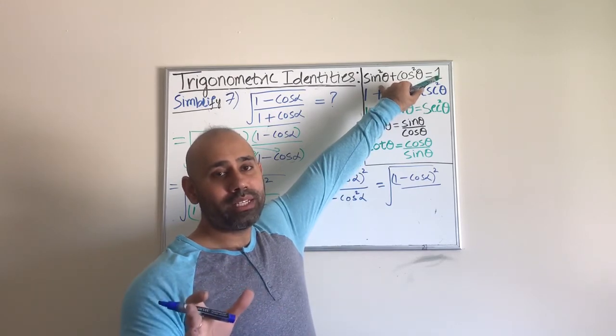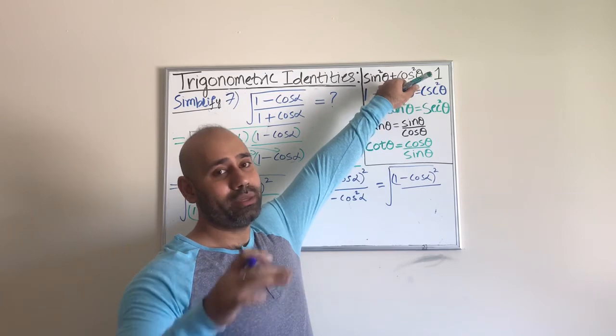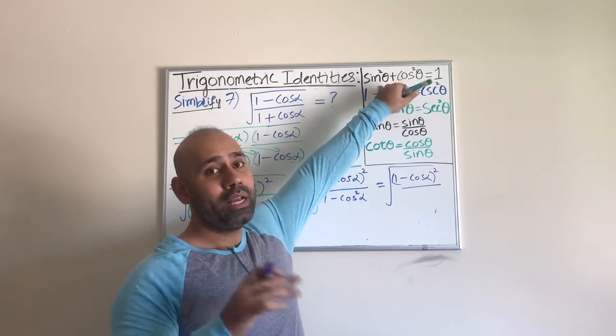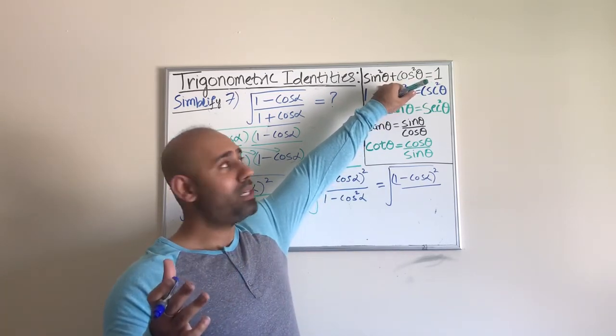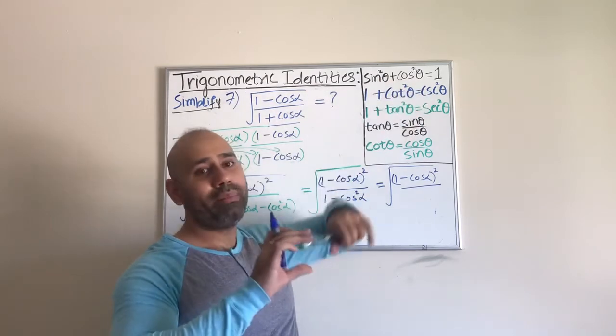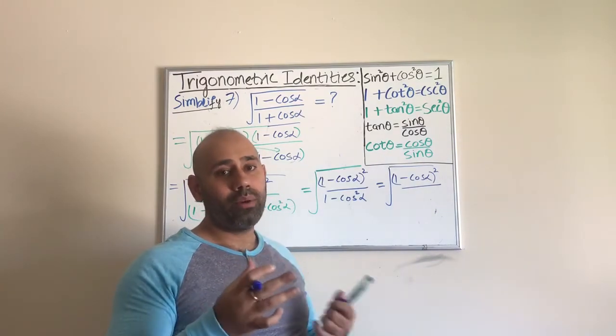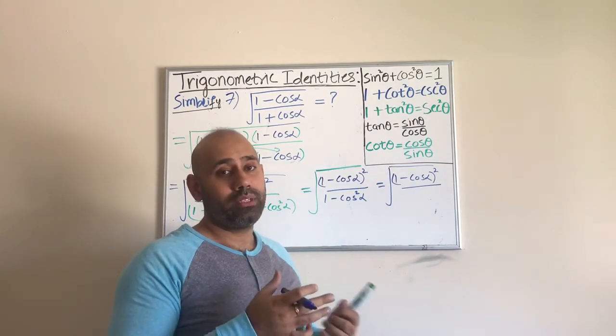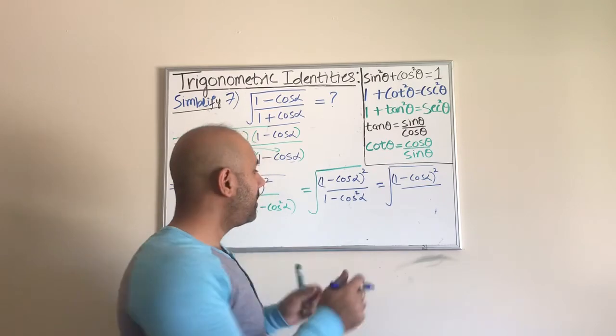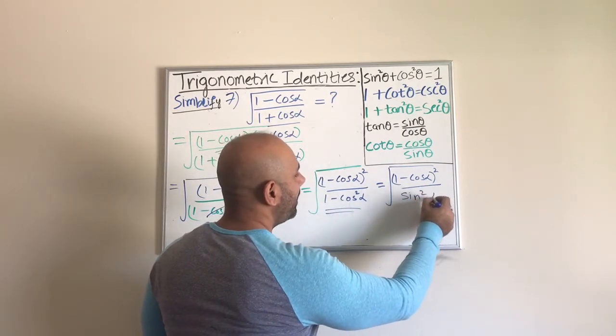So in some formula sheets they have those identities as well, like those. I like to think of them as subcategories of these identities. But if they are not on the formula sheet, you should be able to just look at these basic identities and be able to manipulate them and see how you can get one of these from the other. Okay, so 1 minus cosine squared alpha is simply sine squared alpha.